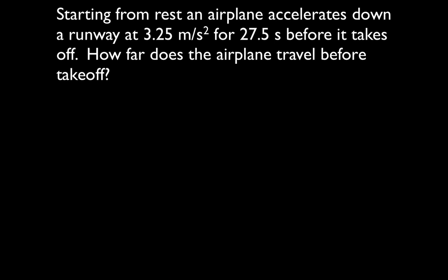The first thing you should always do when solving these problems is write down the five variables that are included in the kinematic equations. Those five variables are: initial velocity, final velocity, delta x (the change in position), acceleration, and time. Write down all five, then fill in what you know and what you don't know.